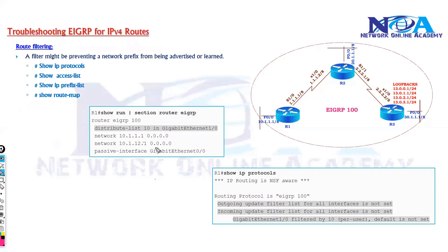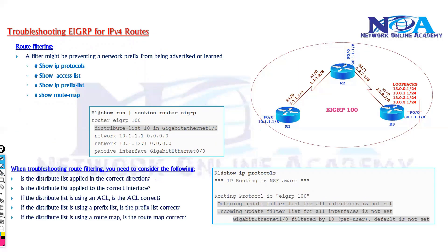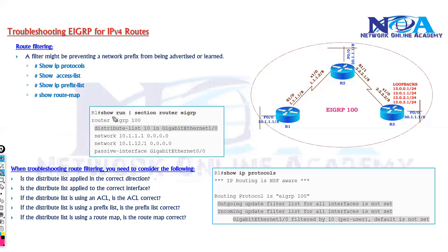When troubleshooting, if route filtering is a requirement for your organization, we always need to ensure that the route filtering is applied in the right direction, on the right interface, and that the ACL or prefix list used to match the statement is correctly configured. You need to know the actual configurations and how they behave.